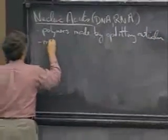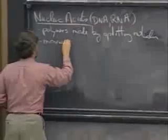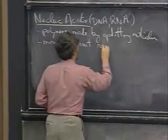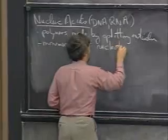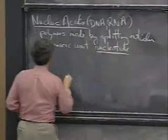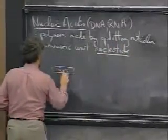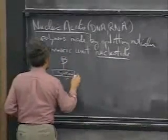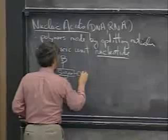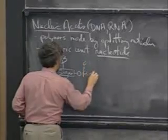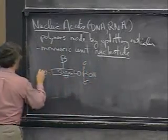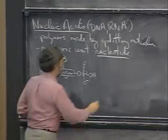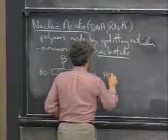In this case, the monomeric units are given the special term nucleotide. A nucleotide consists of a sugar with a base on it. It has a phosphate group at one end and a hydroxyl group — one of the sugar hydroxyls — at the other end.